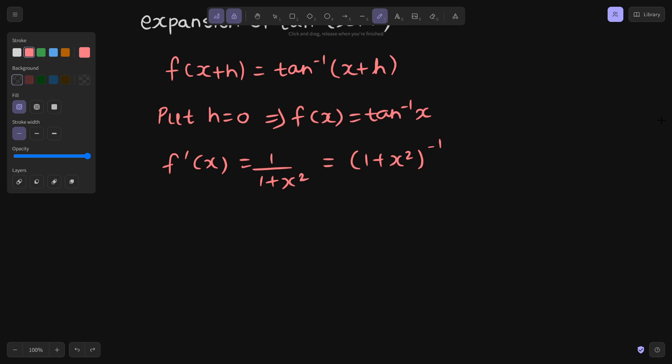Let us find the second derivative. So second derivative will be power rule. Minus 1 comes in front, 1 plus x square power minus 2, times 2x. So this I can write as minus 2x divided by 1 plus x square power 2.